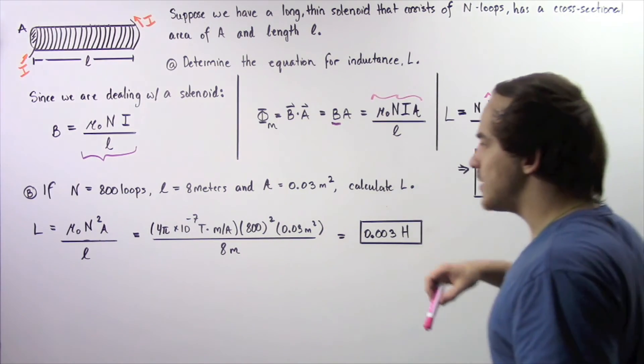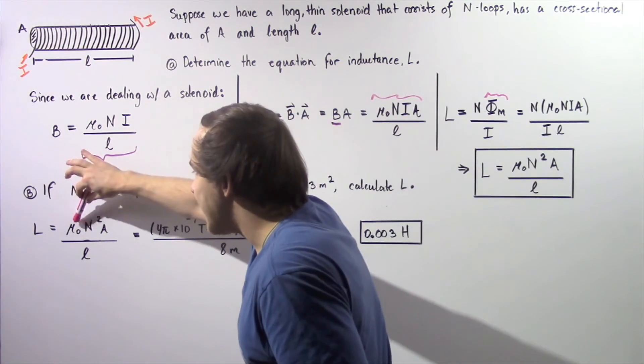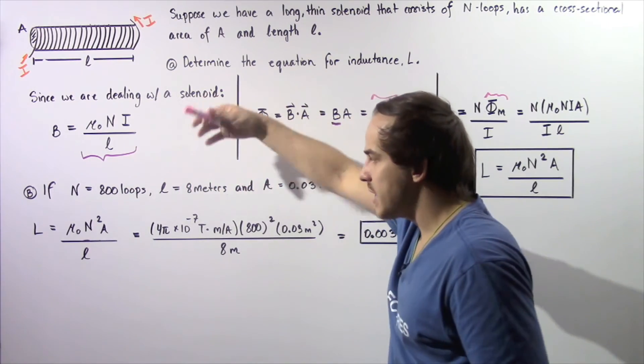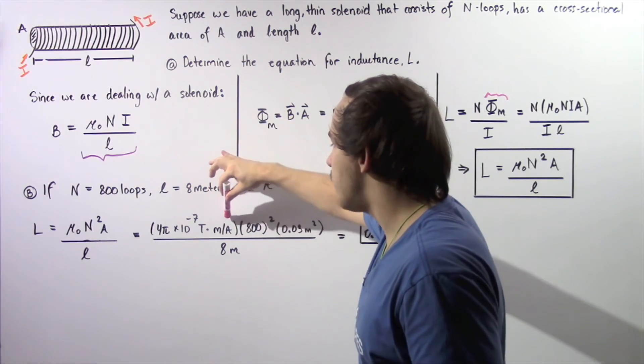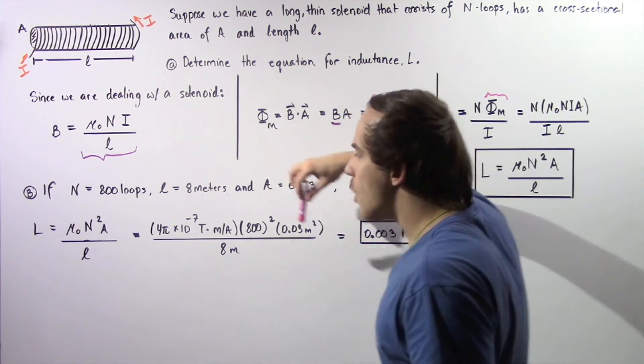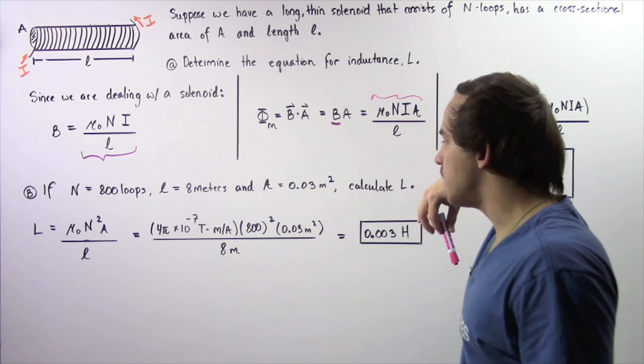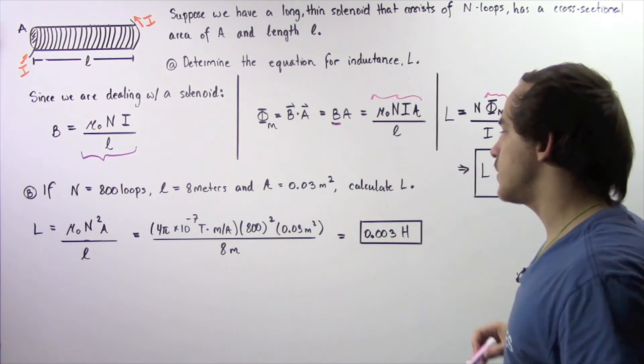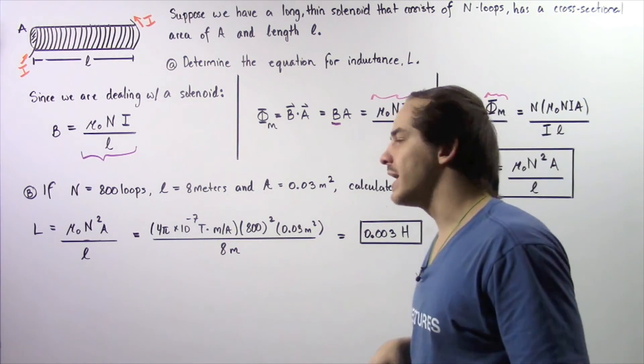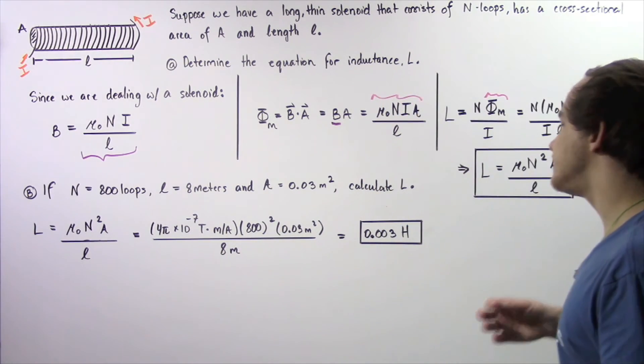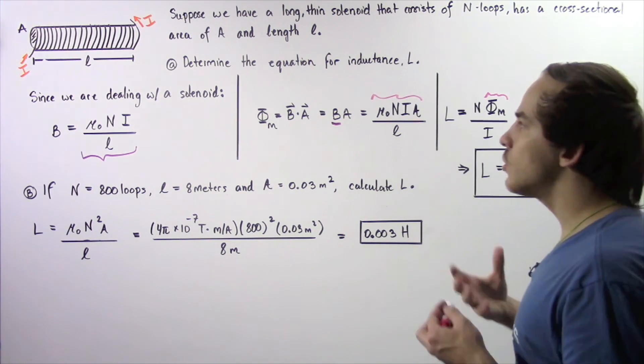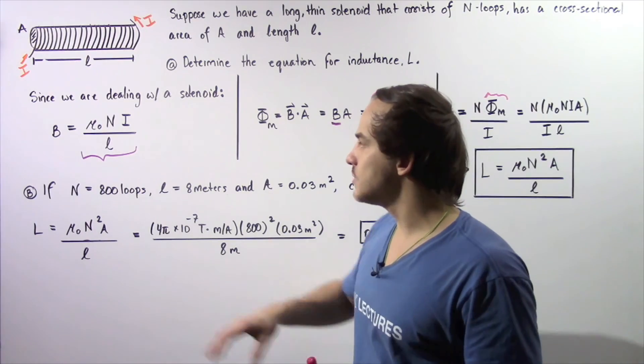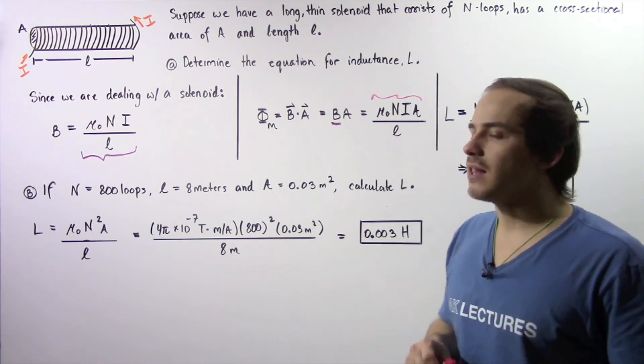We apply this equation so our μ₀, our permeability of free space, is equal to 4π times 10 to the negative 7 teslas multiplied by meters divided by amps, multiplied by the square of 800, multiplied by 0.03 meters squared, divided by 8 meters, our length, and we get about 0.003 henrys or simply 3 millihenrys is the quantity of our inductance in this particular solenoid.